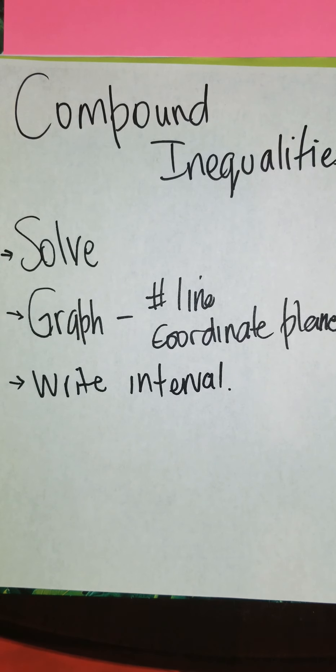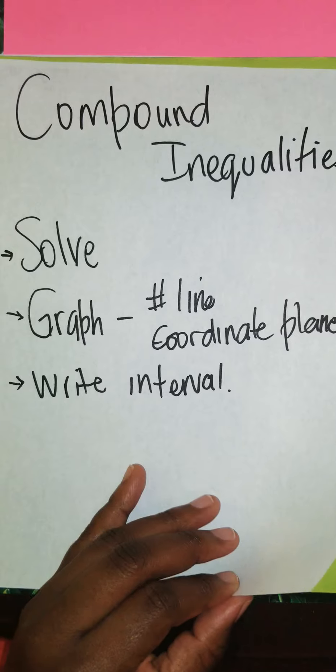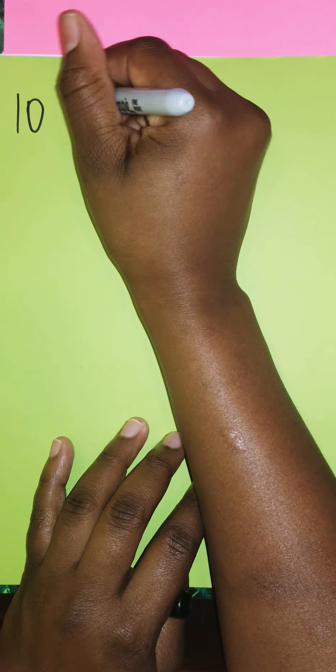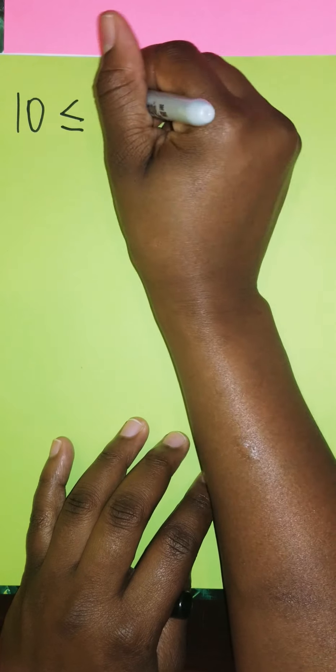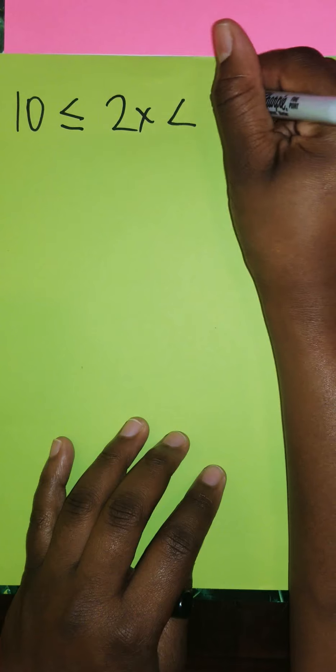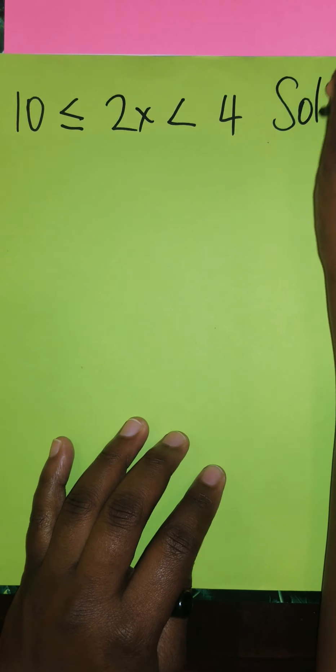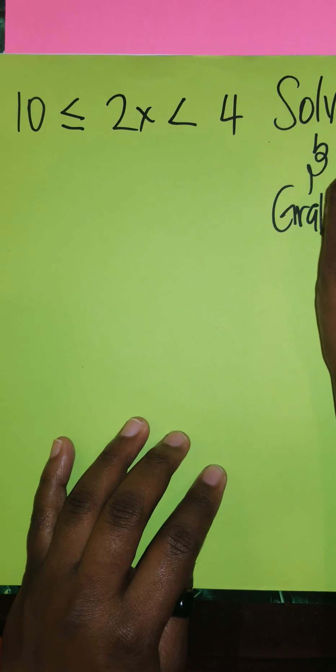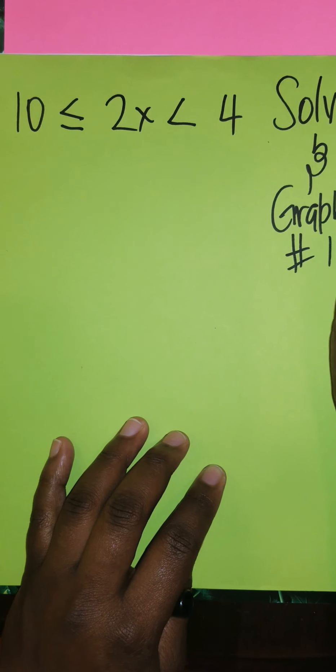So for today's video I'm going to explain to you how to do this. Let's get right into it. So compound inequality, one typical example may be 10 is less than or equal to 2x which is less than 4, and here you're asked to solve and graph on a number line.